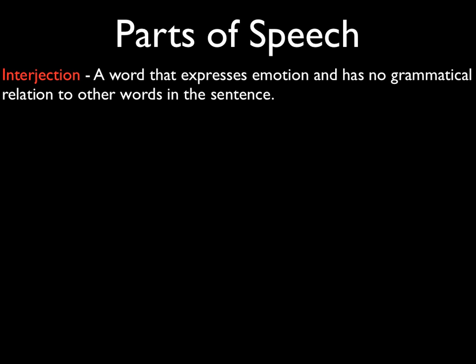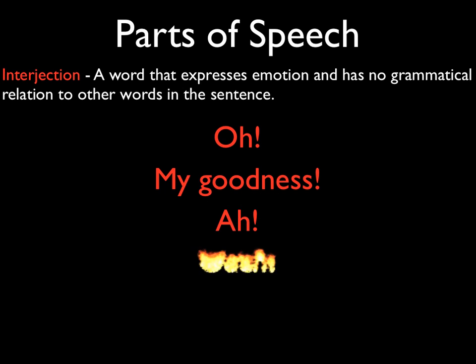Finally, let's talk about the interjection. This is a word that expresses emotion and has no grammatical relation to other words in the sentence. Most of these you're very familiar with — we use them all the time: oh, my goodness, ah, ouch, and finally, wow. So an interjection, you just throw it in; it doesn't have to be connected to anything. It can be a good attention-getter and a good way to express yourself. Well, I hope that you've enjoyed a look at the eight parts of speech, and I hope that you'll review this from time to time so that you can look at a sentence and tell all of its parts without too much trouble.